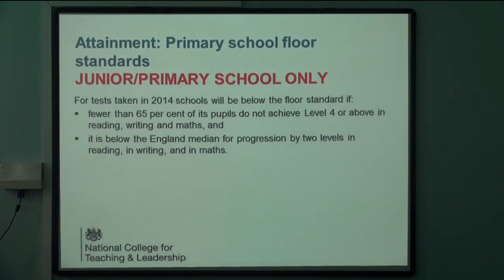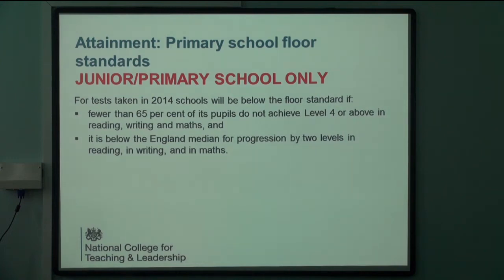In terms of attainment data, something to be aware of: there is a floor standard at Key Stage 2. There isn't a floor standard at Key Stage 1, but there is at Key Stage 2. You've got to get more than 65% of your children at level 4 and above in reading, writing and maths. If you don't do that, you've got to make sure progress is above the median for two levels in reading, writing and maths. If it's below the floor standard, it would more than likely trigger an inspection and certainly raise alarm bells. Moving forwards, they're talking about the equivalent floor standard for next year being 85% in reading, writing and maths.